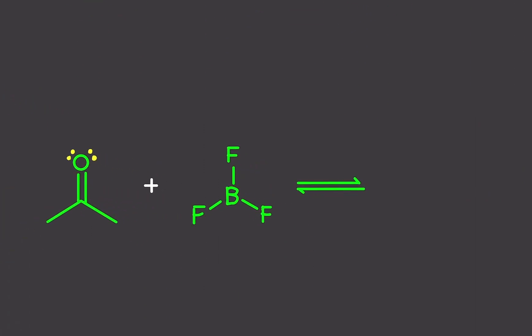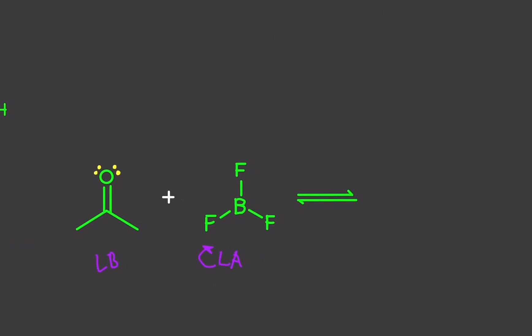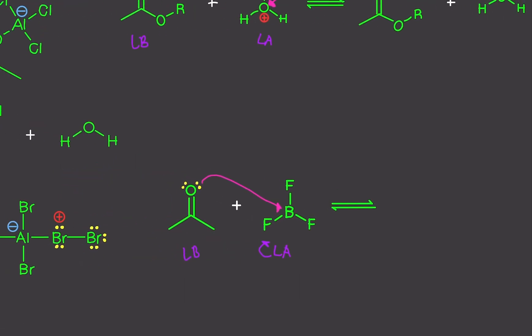Practice problem F: immediately you should know this is the Lewis base because we have electrons. The other molecule has no electrons available, so it's automatically the Lewis acid. The Lewis acid has no protons at all, so we execute the bottom option — merge both molecules together. The base attacks the center atom, which is boron — the most electron-deficient. We combine both molecules together, just like the rule states.